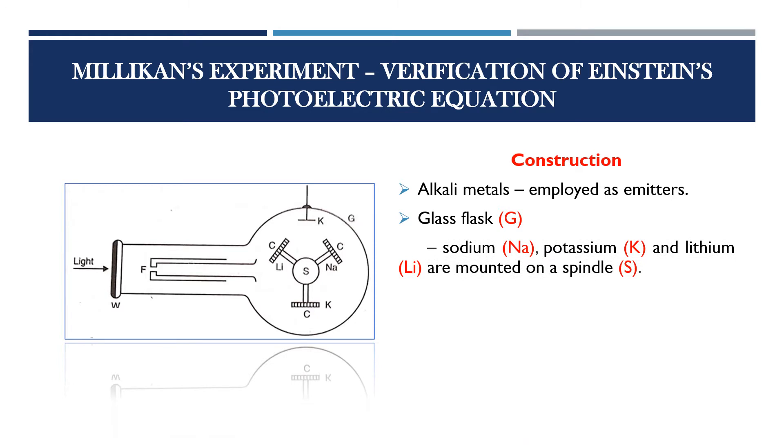Next, there is a glass flask G. Inside the glass flask G, we kept sodium, potassium, and lithium mounted on a spindle S.